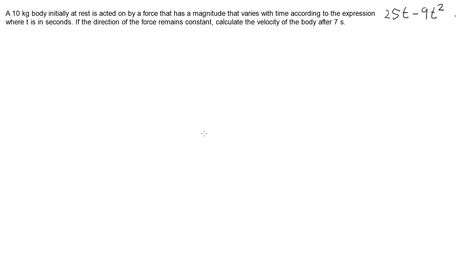Hi, in this video I'm looking at this problem here where we've got a body which is initially at rest and then is acted upon by a force which varies according to time. And we want to know that if the direction of the force remains constant, we're going to calculate the velocity of that body after 7 seconds.